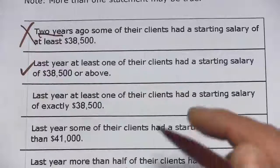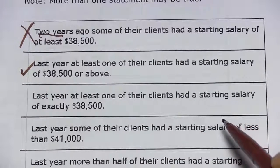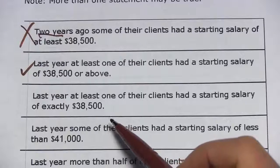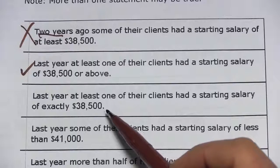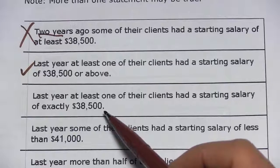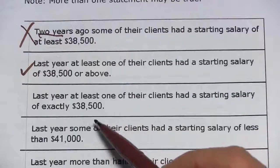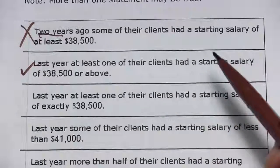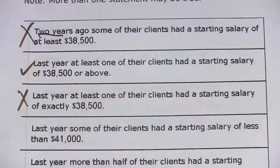The next one says: last year at least one of their clients had a starting salary of exactly $38,500. Well, maybe — that might be the case, but it doesn't have to be. You could have two clients where one had below $38,500 and one had above, but they average out to $38,500. So this one we can't say is true.